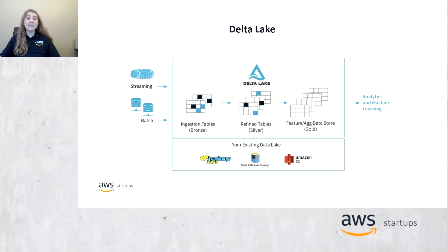Delta Lake is a unified data management system that brings reliability and fast analytics to cloud data lakes. It is a transaction layer that runs on top of existing cloud data lakes and is compatible with the Apache Spark API. It has scalable metadata handling and unifies streaming and batch processing.